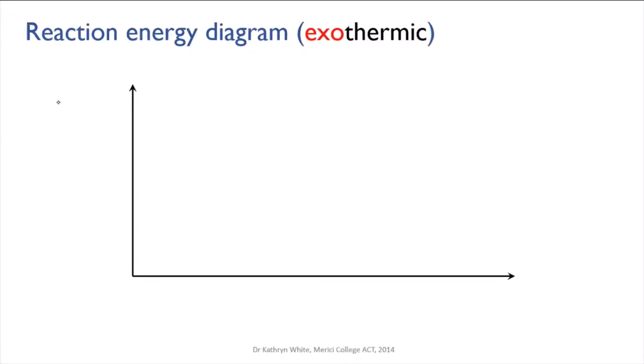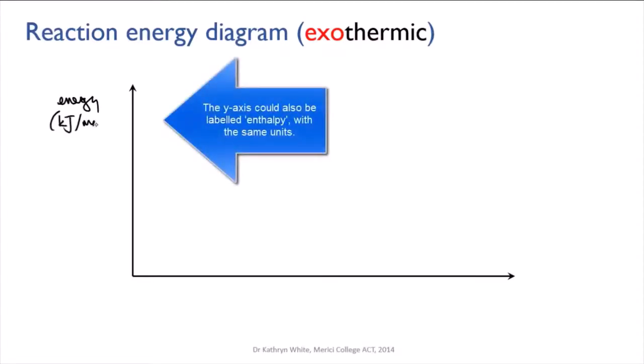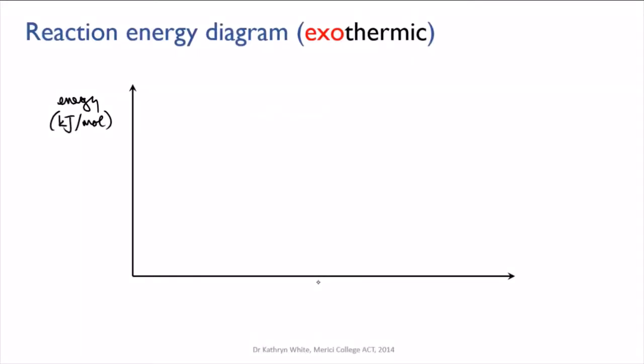Our y-axis represents energy and the units we use for energy are usually kilojoules per mole. Kilojoules is a measure of energy, mole is a measure of how much chemical we've got. We're going to deal with those units in more detail later on in this course.